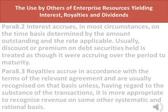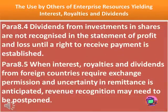Para 8.2: Interest accrues in most circumstances on the time basis determined by the amount outstanding and the rate applicable. Usually, discount or premium on debt securities held is treated as though it were accruing over the period to maturity. Para 8.3: Royalties accrue in accordance with the terms of the relevant agreement and are usually recognized on that basis, unless, having regard to the substance of the transactions, it is more appropriate to recognize revenue on some other systematic and rational basis. Para 8.4: Dividends from investments in shares are not recognized in the statement of profit and loss until a right to receive payment is established. Para 8.5: When interest, royalties, and dividends from foreign countries require exchange permission and uncertainty in remittance is anticipated, revenue recognition may need to be postponed.